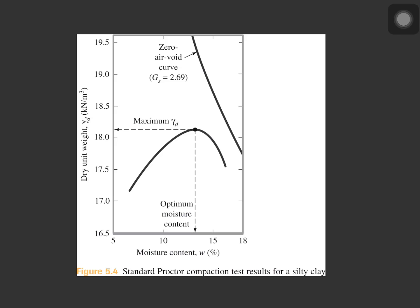Here in this figure, it shows a compaction for a silty clay soil using the standard proctor compaction test. The procedure for the standard proctor test is given in ASTM test designation D698 and AASHTO test designation T99.